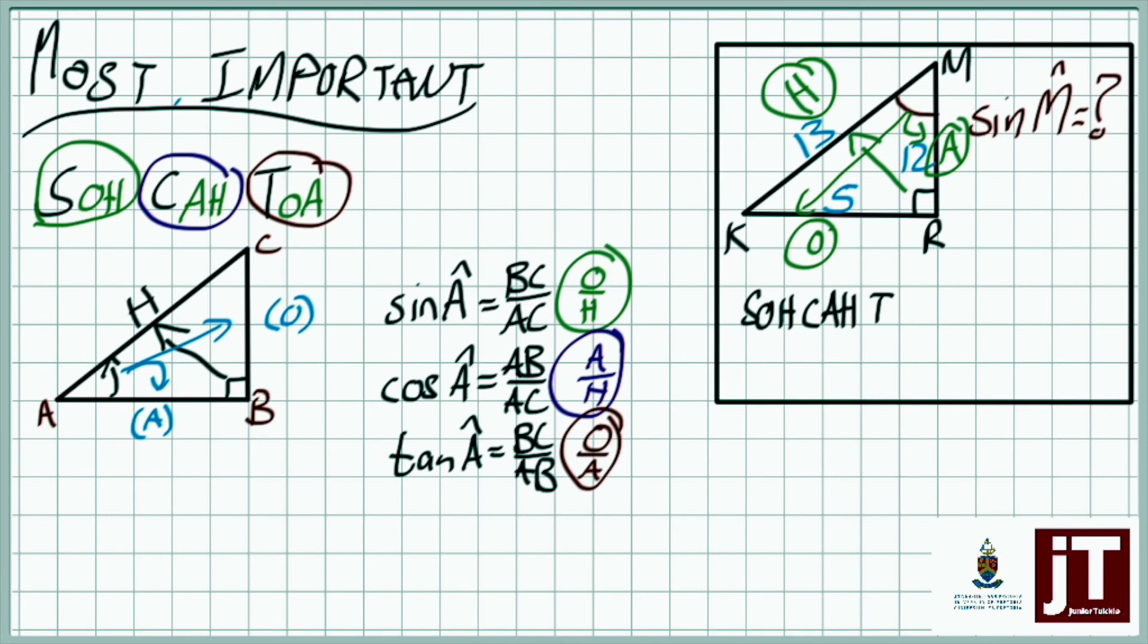I love going back to SOHCAHTOA every time and you'll see I go there in all of the videos over and over again. SOHCAHTOA: sine of M is opposite over hypotenuse. So it's KR over KM which is 5 over 13. What does it mean? Please don't worry about that at the moment. For this video we are just looking at the ratios.